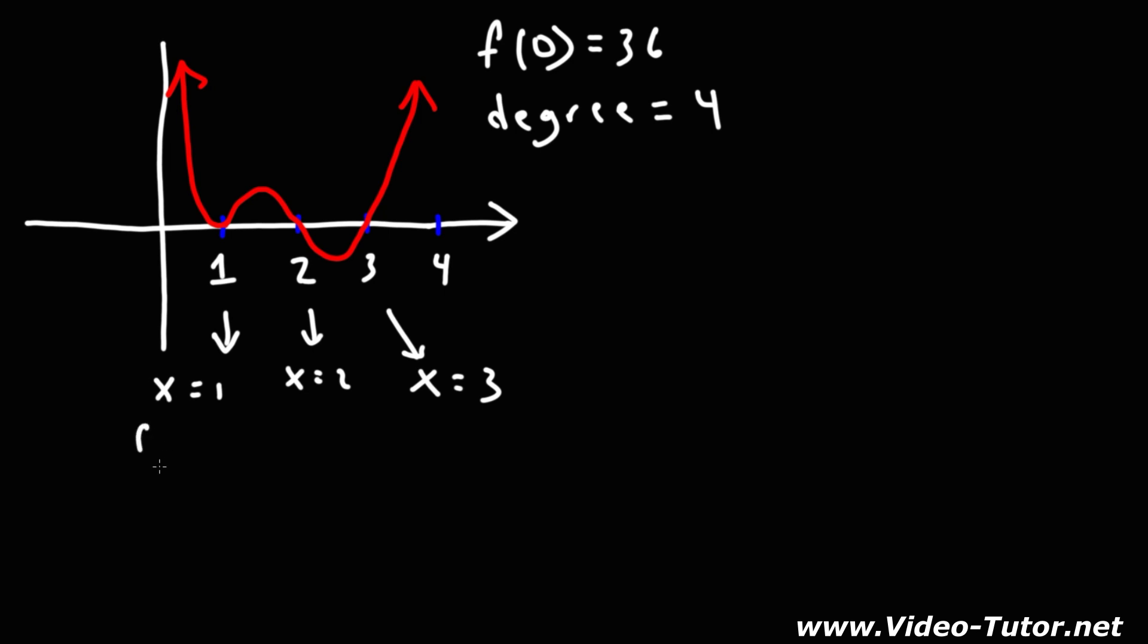For the zero x equals 1, the factor is going to be x minus 1. If you set x minus 1 equal to 0 and solve for x, you'll get that x will have a value of positive 1. When x is equal to positive 2, the factor that corresponds to that is going to be x minus 2. And for x equals 3, the factor is x minus 3.